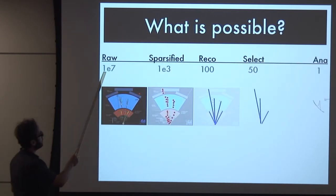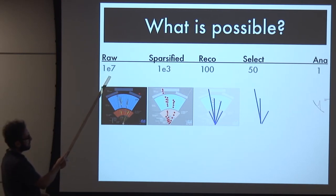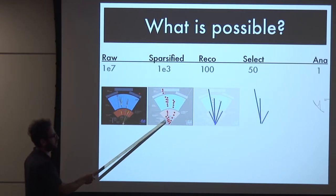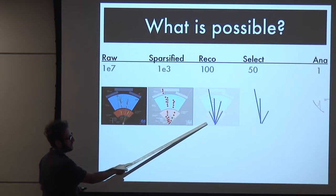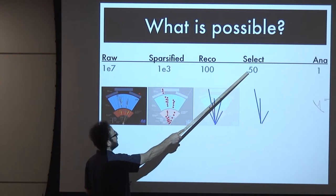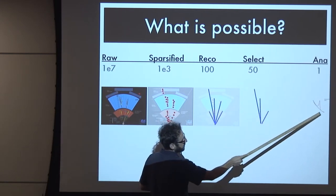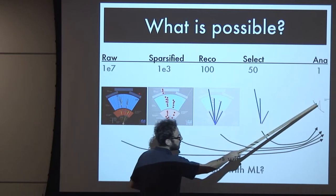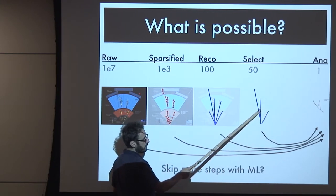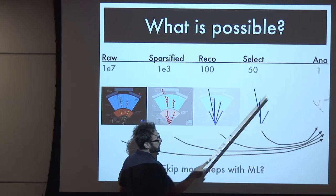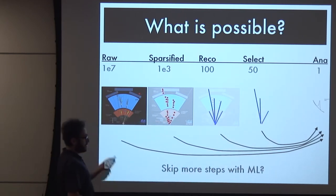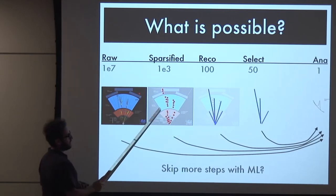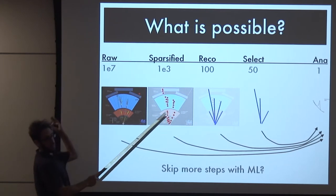What's possible: we start with raw data - really high-dimensional, around 100 million-dimensional. We sparsify, looking only at hits in the detector. We build those into reconstructed objects - electrons, jets, etc. We select the ones relevant to our analysis. Then we boil it down to one dimension - maybe a mass variable or something else. Machine learning can improve the step from selected objects to the final discriminant. But does that mean we can skip more steps - pass the network everything in the event without selection, or skip reconstruction entirely?